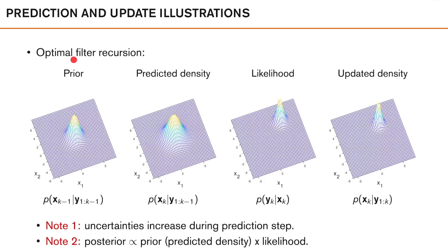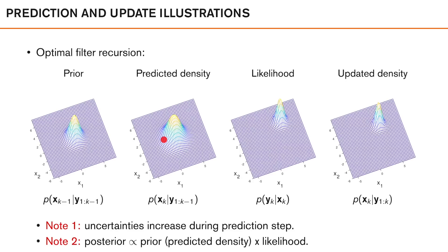Let's look at how the prior, predicted density, likelihood, and updated density look for this problem at some generic time k. At the start of the recursion we have the posterior density from the previous time instance, giving us information that the object was most likely somewhere near a certain location. We then use this information together with our motion model to predict where the object would be at the current time. Note that as we are predicting into the future without adding any new information, we become more uncertain — illustrated by the predicted density being wider than the prior. This is logical given the random walk motion model, where the object takes a step of random length and random direction.